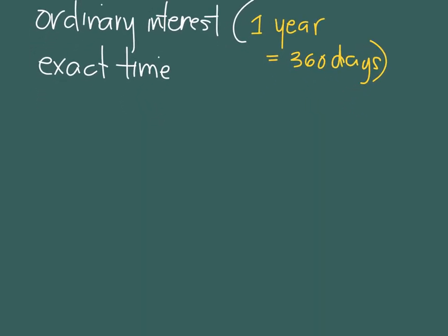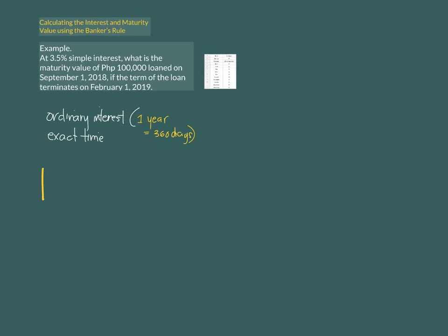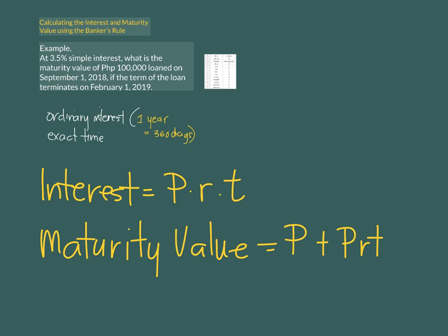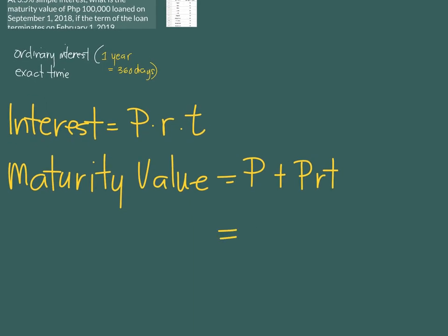The interest is still computed with the same formula: the principal times the rate times the time. If we are going to find the maturity value, this simply means the principal amount plus the interest. You can also simplify P plus PRT as P times (1 plus RT), by factoring out the P.